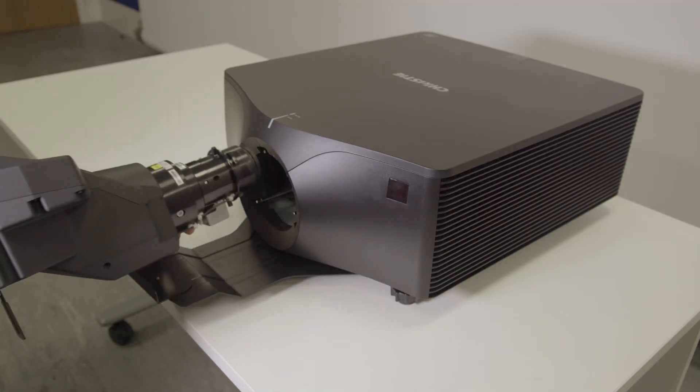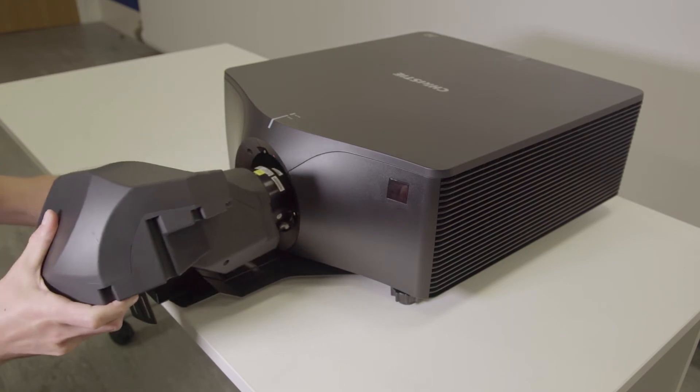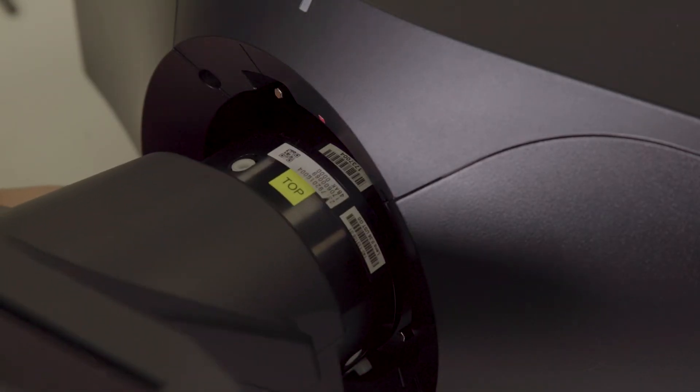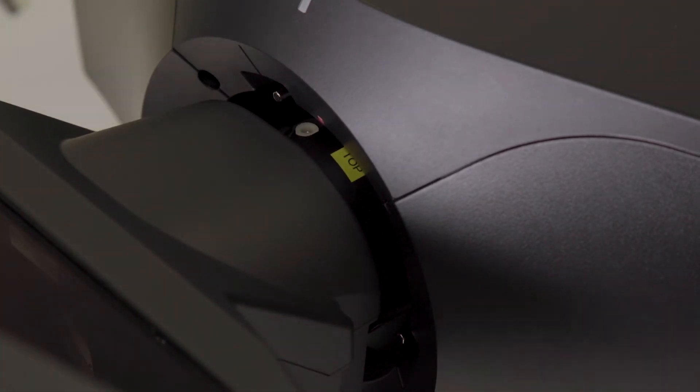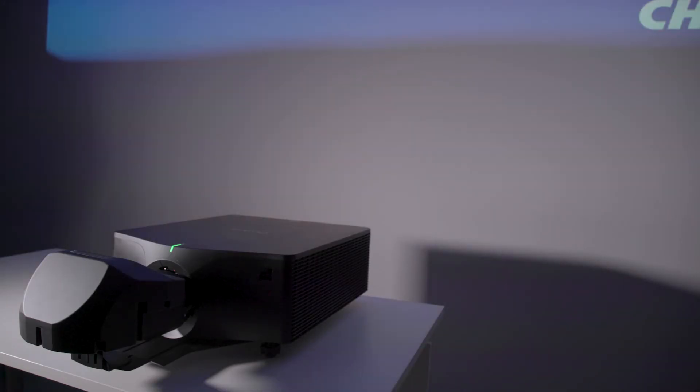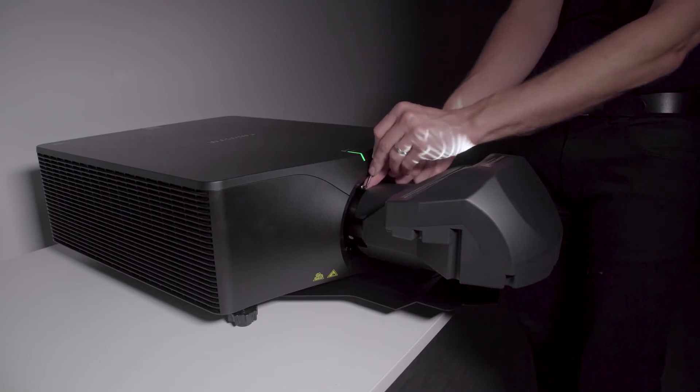To do this you need to insert the UST lens into the projector. Slightly angle to the left so the label marked top aligns with the status LED indicator. Ensure the UST lens has been fitted then plug in the AC power and turn on the projector.